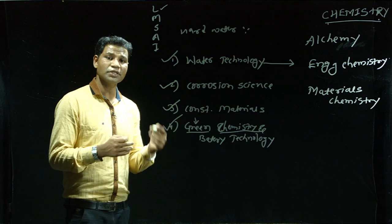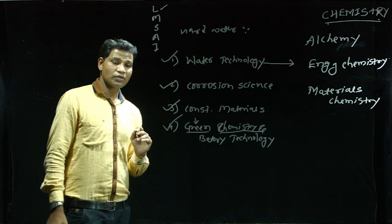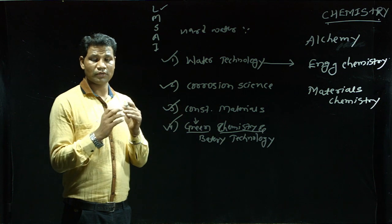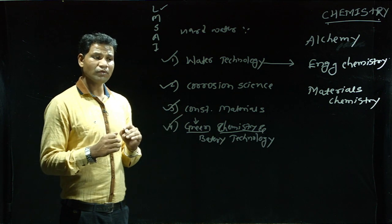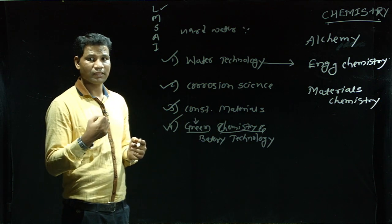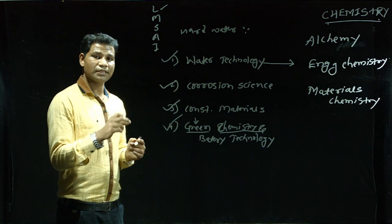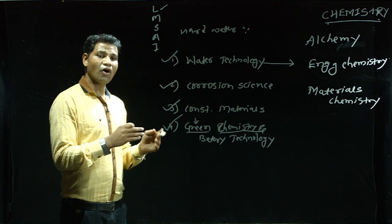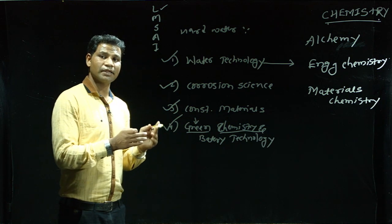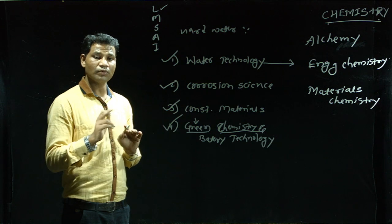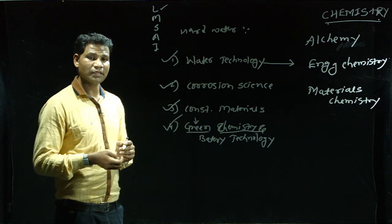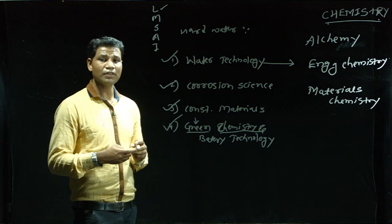Carbon credit comes under green chemistry. Carbon credit spreads awareness among people about pollution prevention. Burning of fossil fuels increases day by day, leading to formation of greenhouse gases like CO2. Carbon credit is a generic term for a tradable certificate or permit representing the right to emit 1 ton of CO2 or any other greenhouse gas. A company is allowed to emit only 1 ton of CO2; if higher, they have to pay expenses for that.